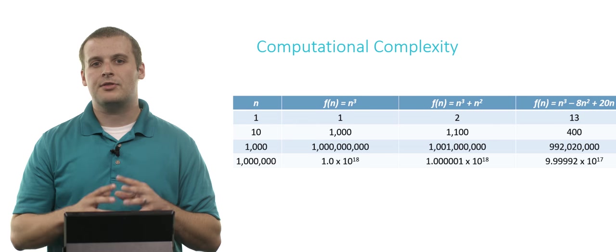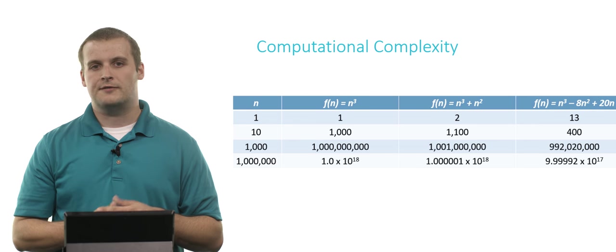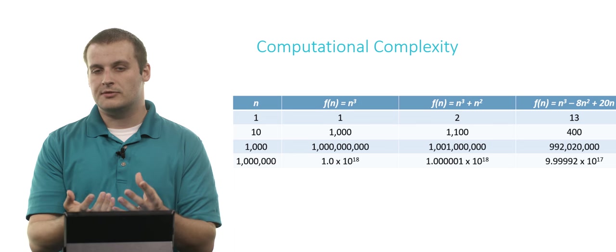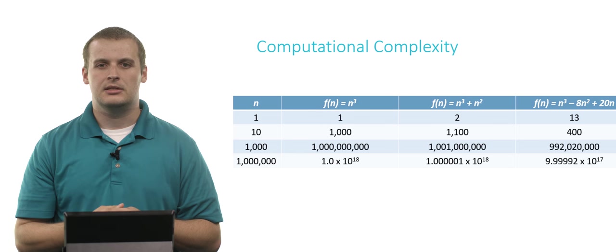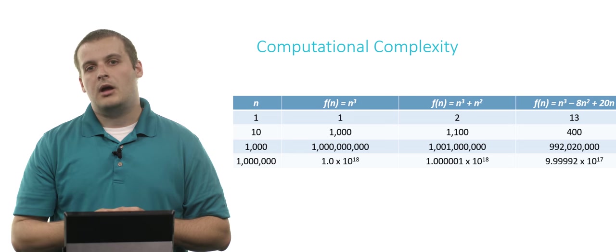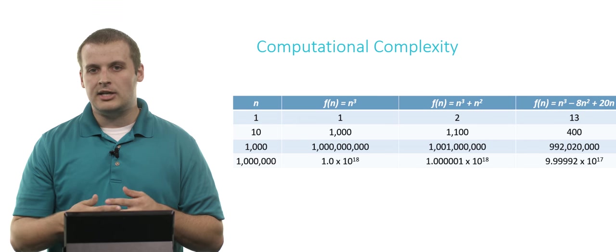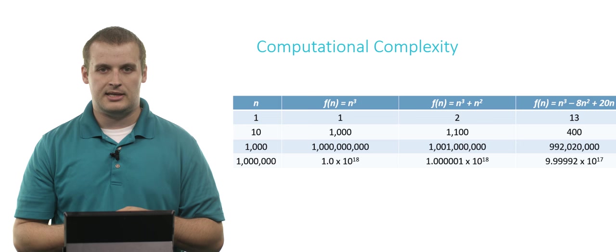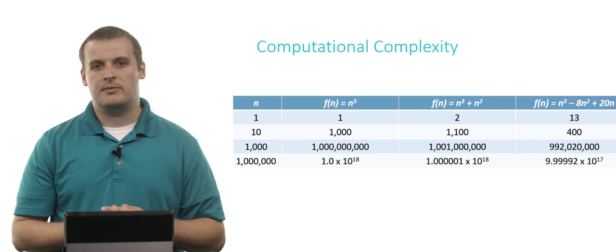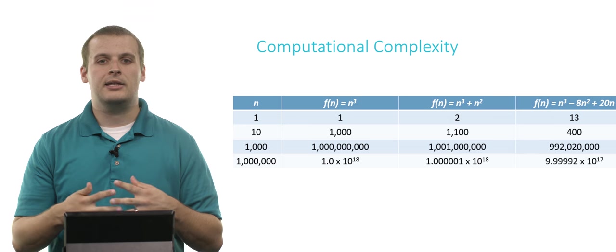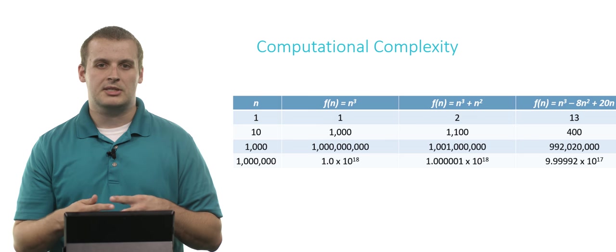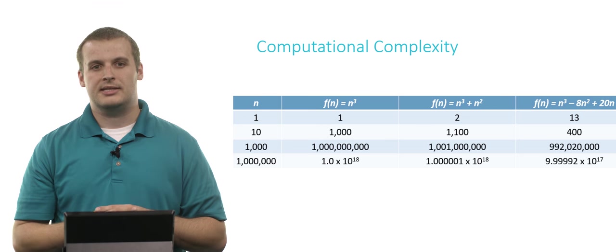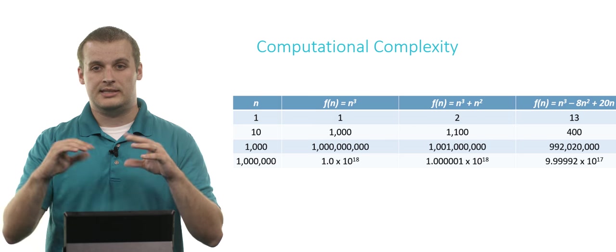So let's say that we have three different algorithms, the first of which takes n cubed, some units of resources, to process a data set of size n. We have a second algorithm that takes n cubed plus n squared resources to process a data set of size n. And we have a third algorithm that takes up n cubed minus 8n squared plus 20n units of resources to process an algorithm with a data set of size n.